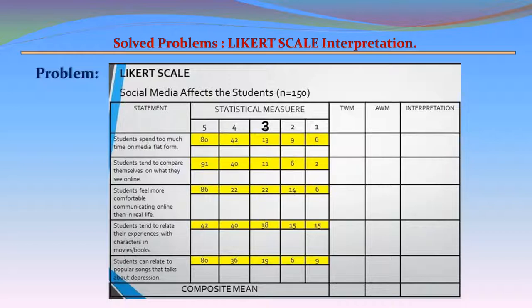Statement 1: Students spend too much time on media platforms. The statistical measures from scale 5 to 1 are: 80, 40, 13, 9, and 6.